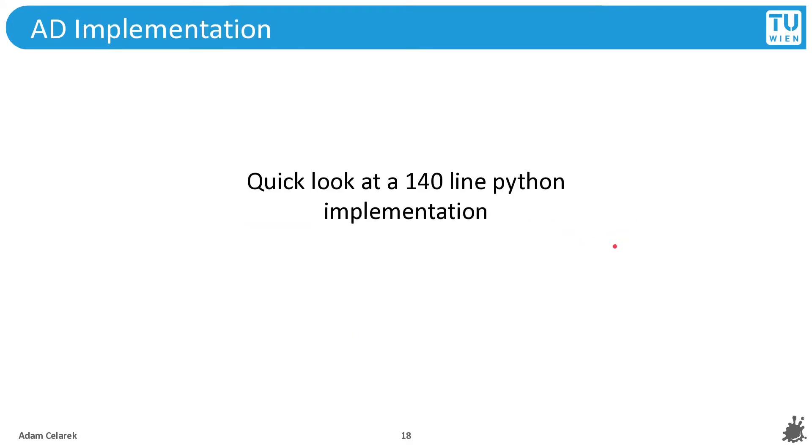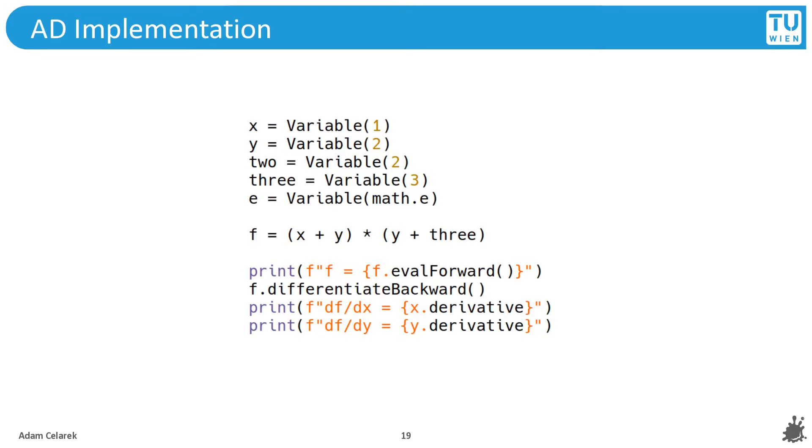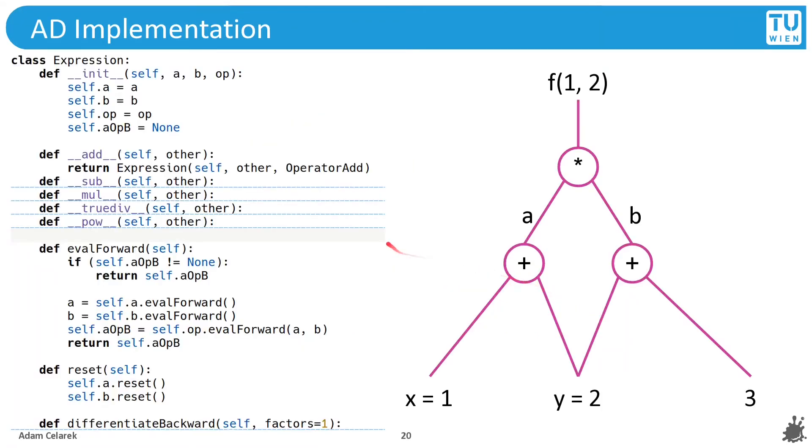All this tree building and walking and adding, there must be a lot of complex code. Well no, it's surprisingly easy. I've managed to implement all that in just 140 lines of Python code. Here is what we want to achieve: we have several variables which will collect the gradients, and we form an expression f. We can evaluate this expression, after that we can call differentiate backward, and we collect the results in the variables.